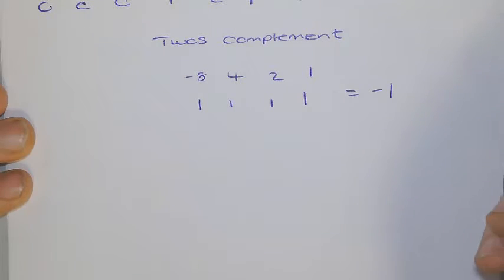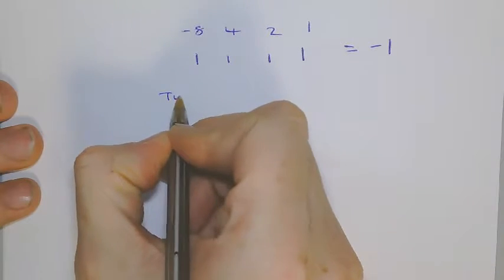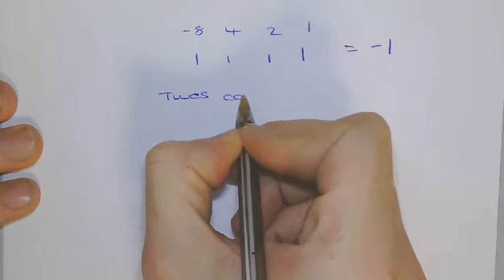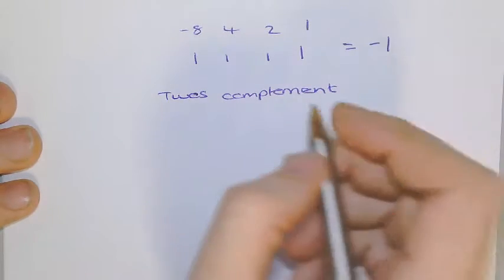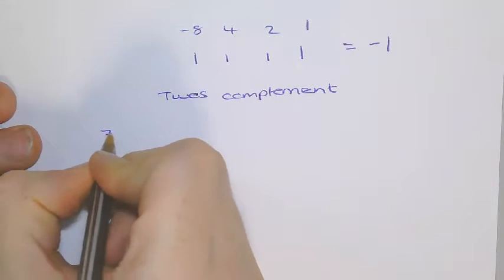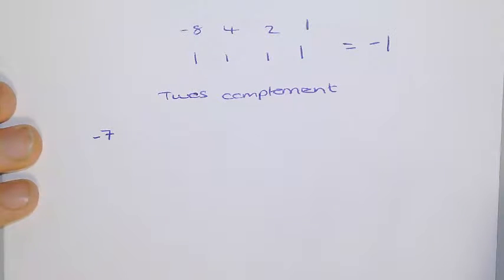Now, there are other ways of doing two's complement, just as a rundown. Just writing this out. I might want to make the number minus 7. So what I would do, to begin with, is I'd work out what the number 7 is.